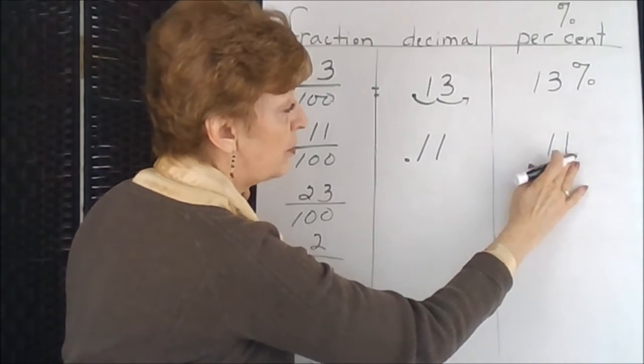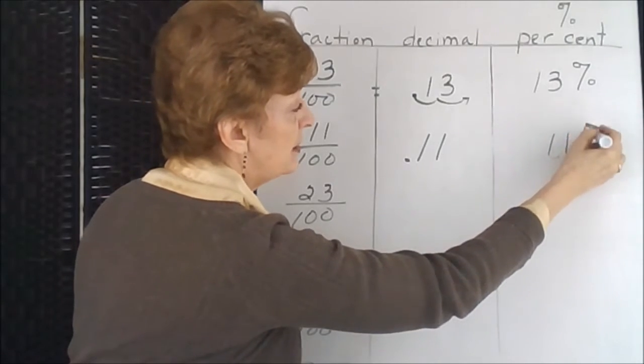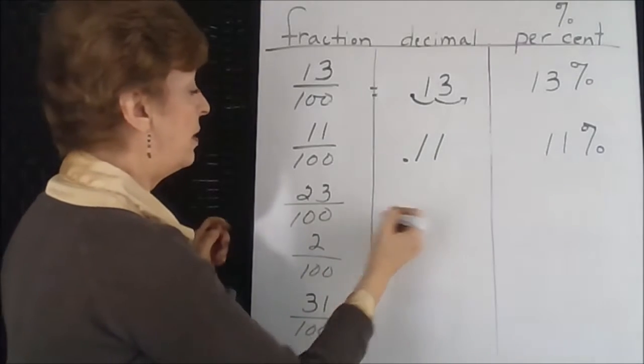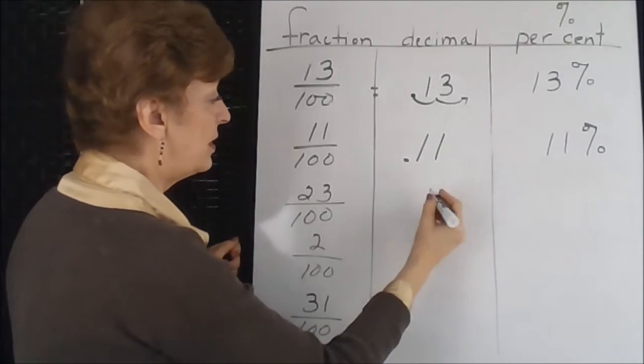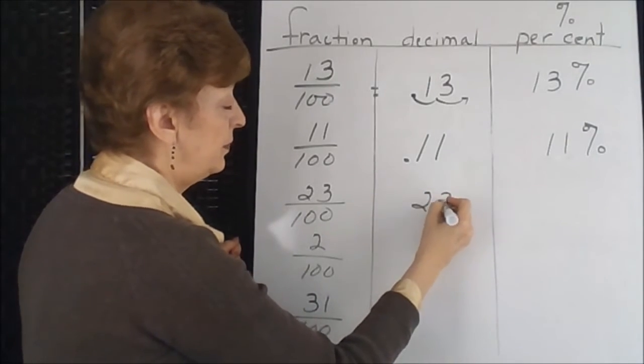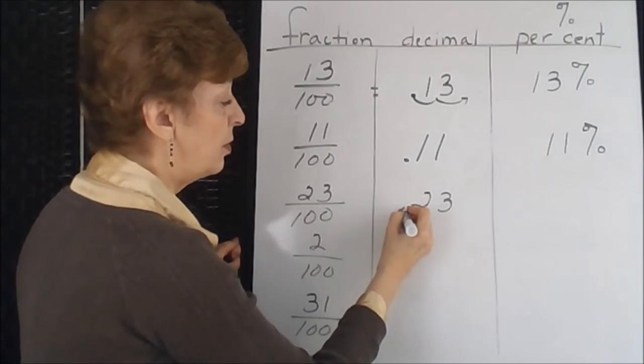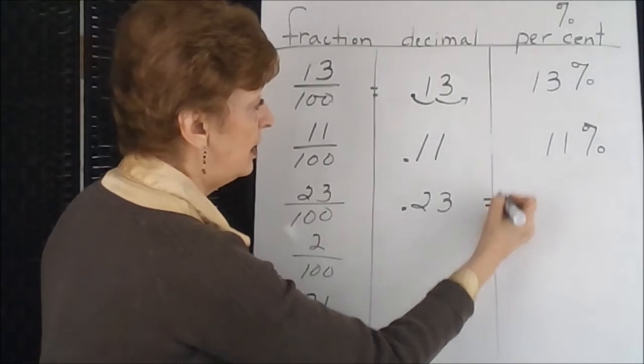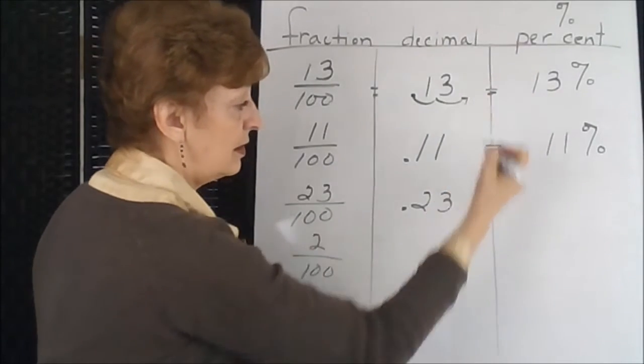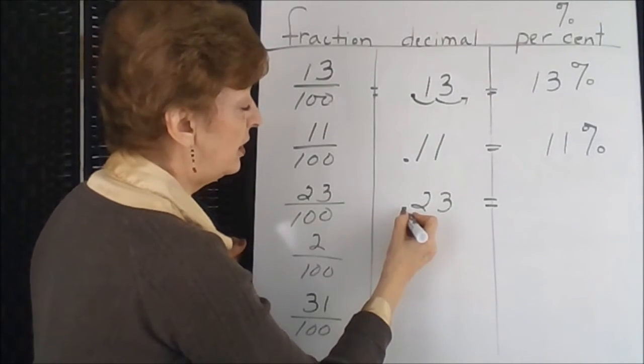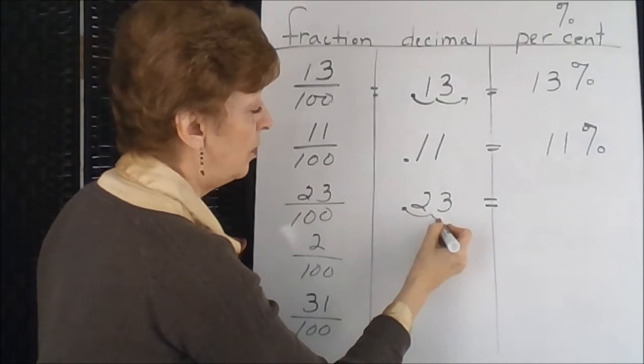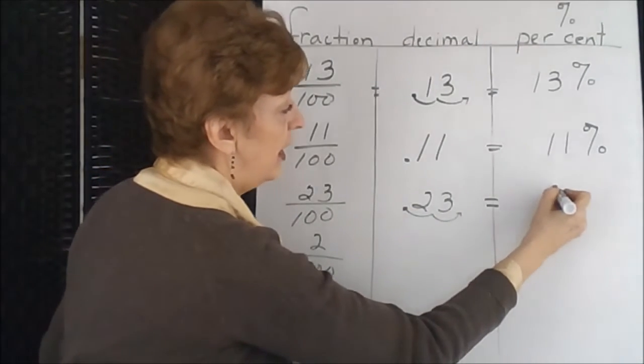23/100, we would need the 3 to be in the hundredths position. That means that our decimal point has to go here. To switch it to the percent column we would visually change the decimal point two places and it would look like this.